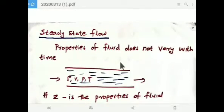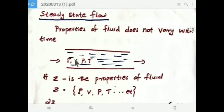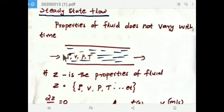What is steady state flow? It is the type of flow in which properties of fluid do not vary with time. The properties of fluids include density, velocity, pressure, temperature, etc.